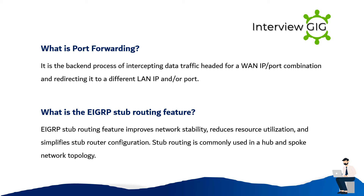What is the EIGRP stub routing feature? The EIGRP stub routing feature improves network stability, reduces resource utilization, and simplifies stub router configuration. Stub routing is commonly used in a hub-and-spoke network topology.